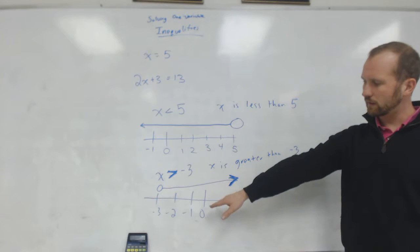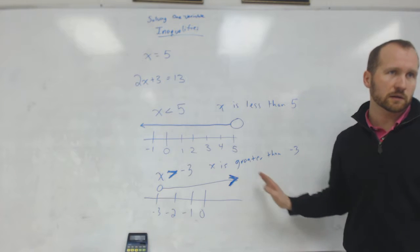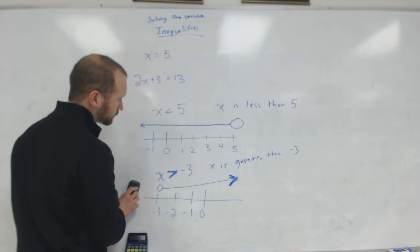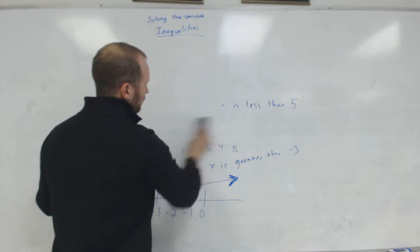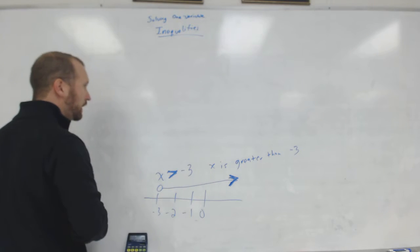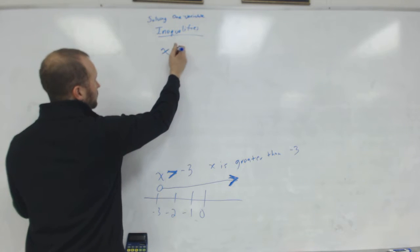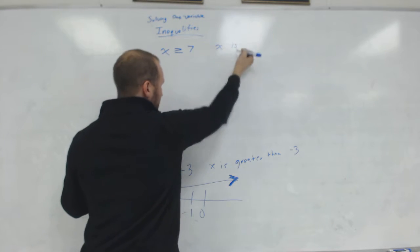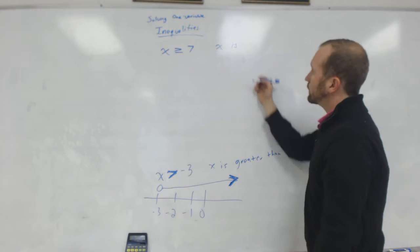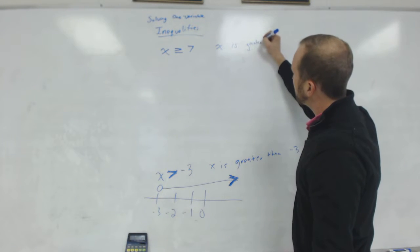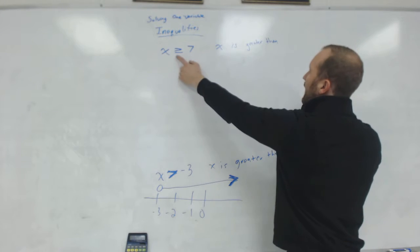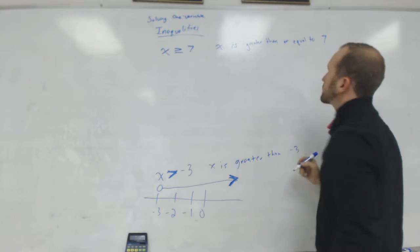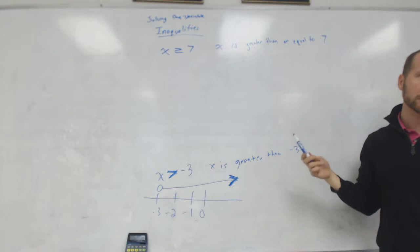X could be any number greater than negative 3 — it could be 0, it could be 700. There are two other types of inequalities. We have less than and greater than, and we also have the greater than or equal to symbol. We would read this as X is greater than or equal to 7.